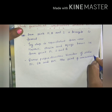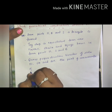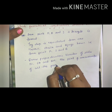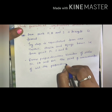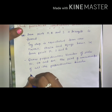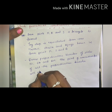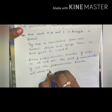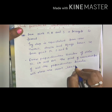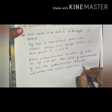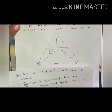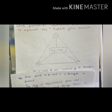The next question: Maithili, Shaila, and Ajay live in different places in a city. A toy shop is equidistant from all three houses. Which geometrical construction should be used to represent this? We have to determine the correct construction and explain our answer. The toy shop is at equal distance from Maithili's, Shaila's, and Ajay's homes.